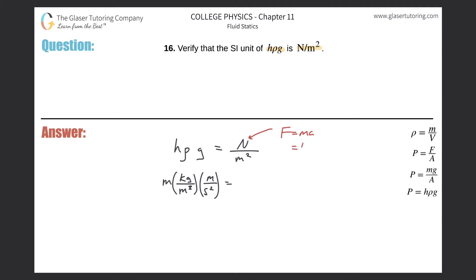It's mass, which is kilograms, multiplied by acceleration, which is meters per second squared. So basically now I'm just going to take this and substitute it in for the newton. So this is going to work out to be kilogram times meter per second squared, all divided by meters squared.